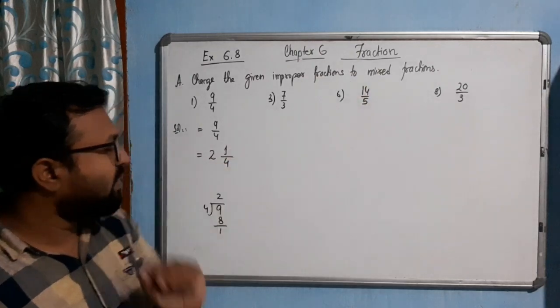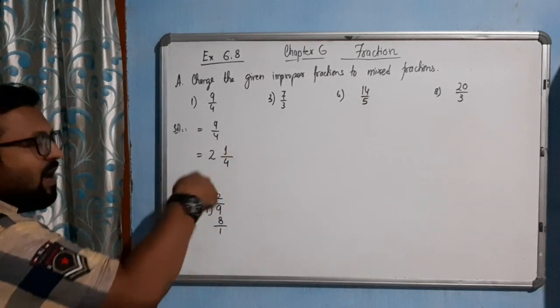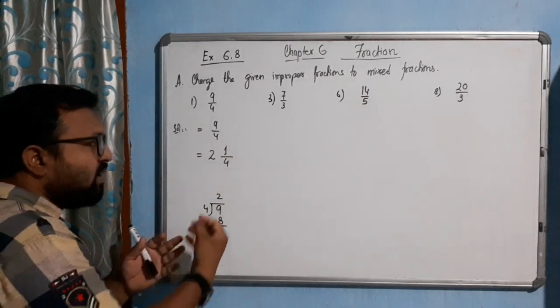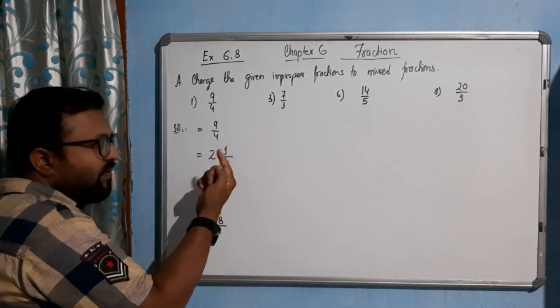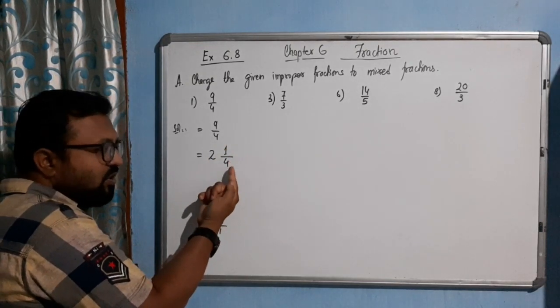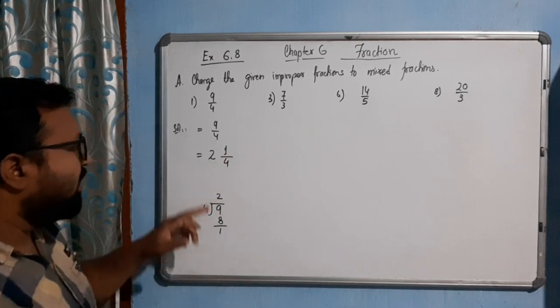So 2 1/4. In this way we can convert into mixed fraction. This is our mixed fraction. Why mixed? Because it is a mixture of a whole number as well as a proper fraction. 1 by 4 is proper because the numerator is less than the denominator.